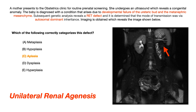Looking solely at the question stem — developmental failure of the ureteric bud and metanephric mesenchyme — if you know your embryology, that already limits what this could be to a couple of things. Once you add autosomal dominant inheritance and a RET defect, honestly, even without the image, you should have been able to identify unilateral renal agenesis. But because that's a challenging thing to do, I threw in the image.